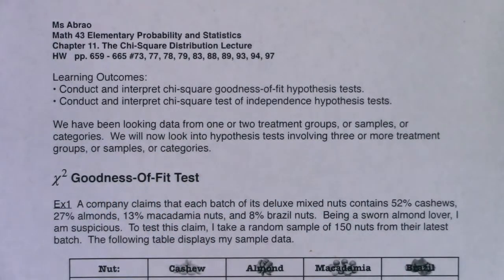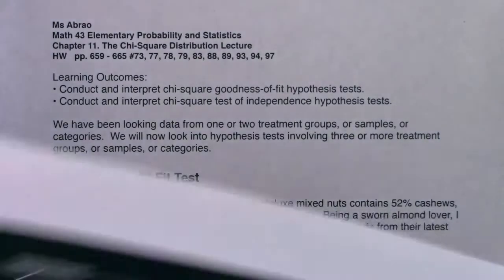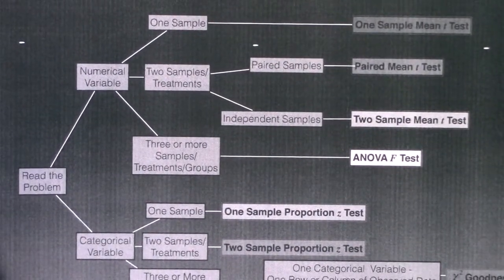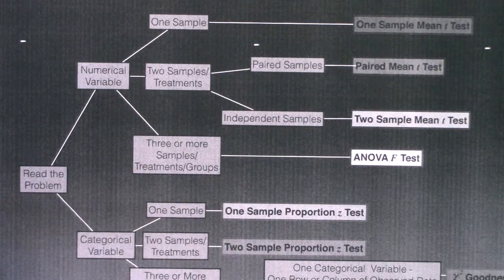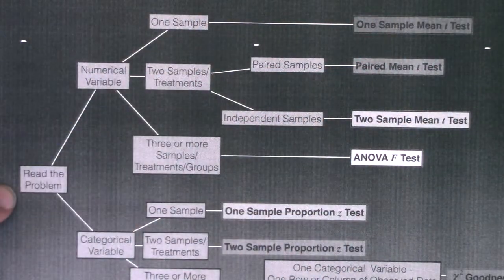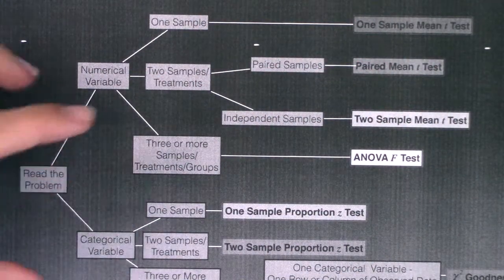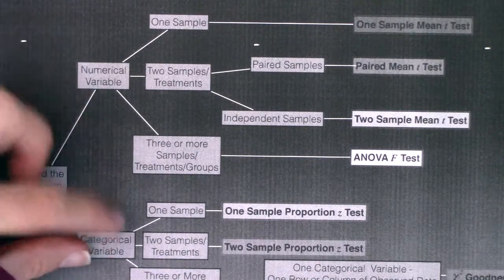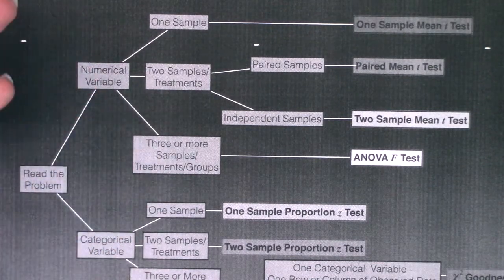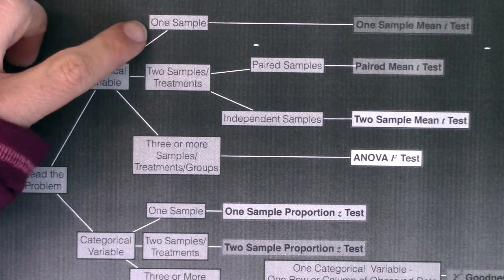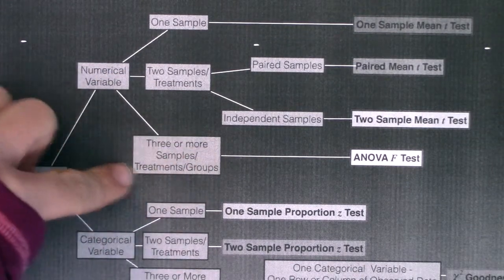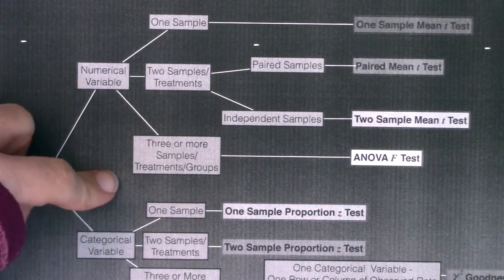Before I get into the new stuff, I want to show you this flowchart — you can find it up on campus. This is a summary of everything we've done and what we're going to do. We always start with: read the problem, then decide if you have a numerical variable or a categorical variable. Are you in mean land up top or proportion land down here? If you're in mean land, decide: do you have one sample, two samples, or three or more samples?